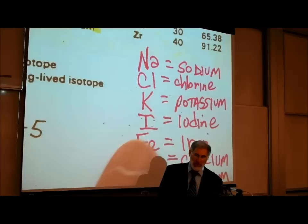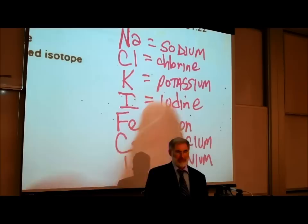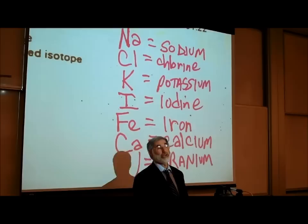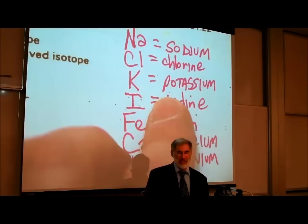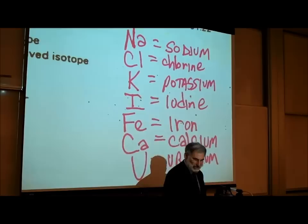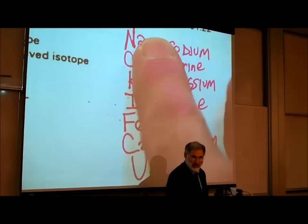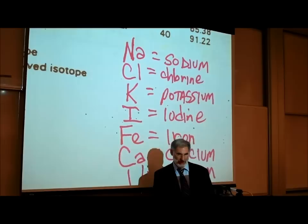Cl is the abbreviation for chlorine. They didn't use C for chlorine because C had already been used for carbon. K is the abbreviation or symbol for potassium. If you combine sodium with chlorine, that's sodium chloride or salt, which is important to living things.